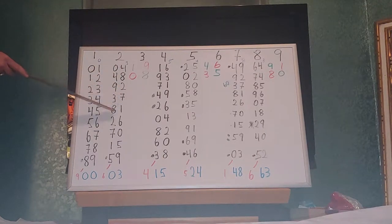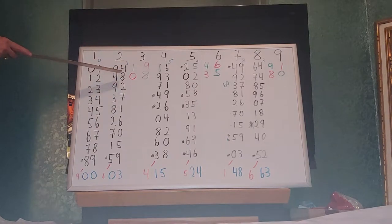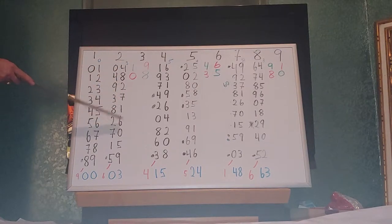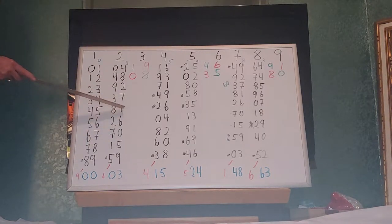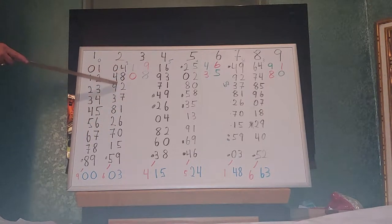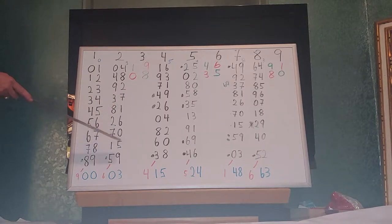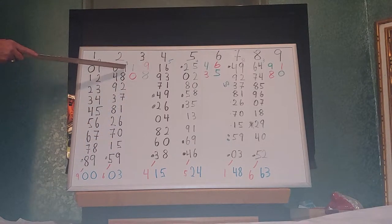Then 4, 9, 3, 8, 1, 7, 2, 8, 4. Then 4, 9, 3, 8, 2, 6, 1, 7, 2, 8, 4. Then 4, 9, 3, 2, 7, 0, 6, 1, 7, 2, 8, 4. Then 4, 9, 3, 8, 2, 7, 1, 5, 0, 6, 1, 7, 2, 8, 4. Then 4, 9, 3, 8, 2, 7, 1, 5, 9, 5, 0, 6, 1, 7, 2, 8, 4.